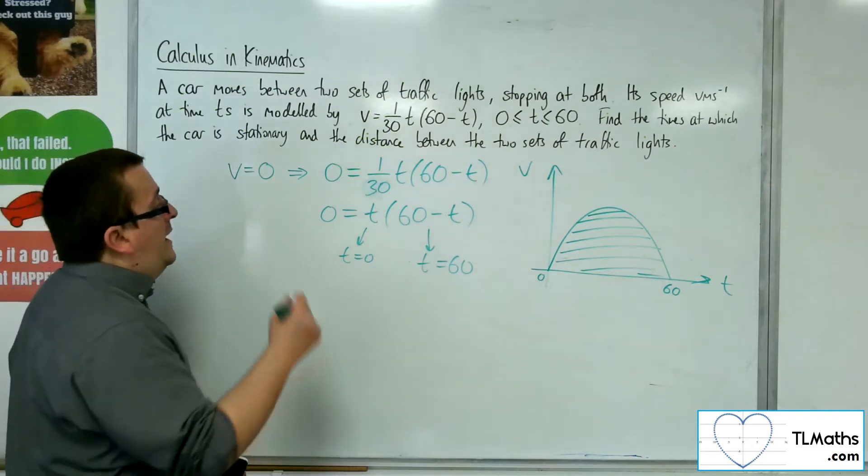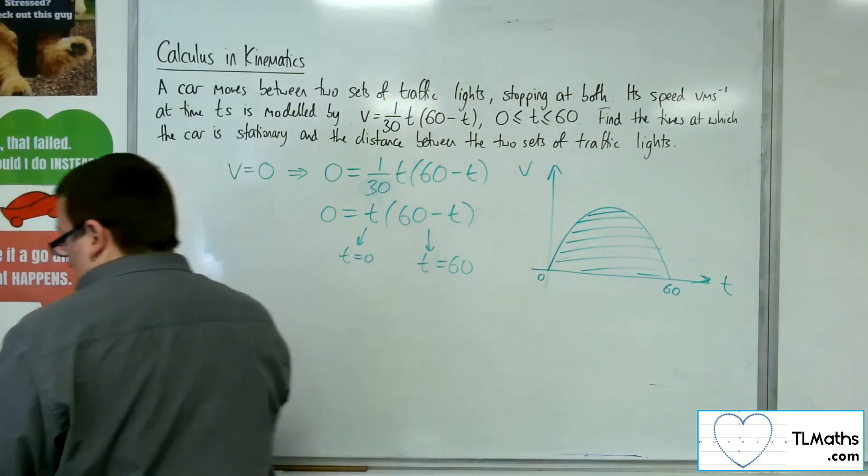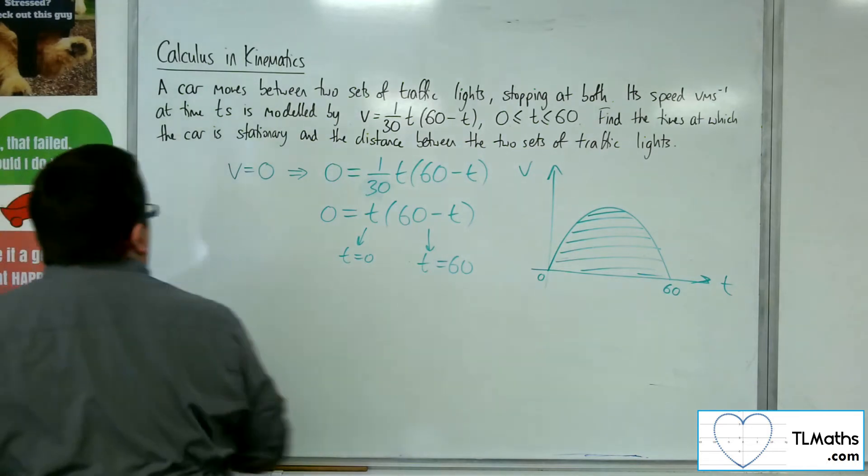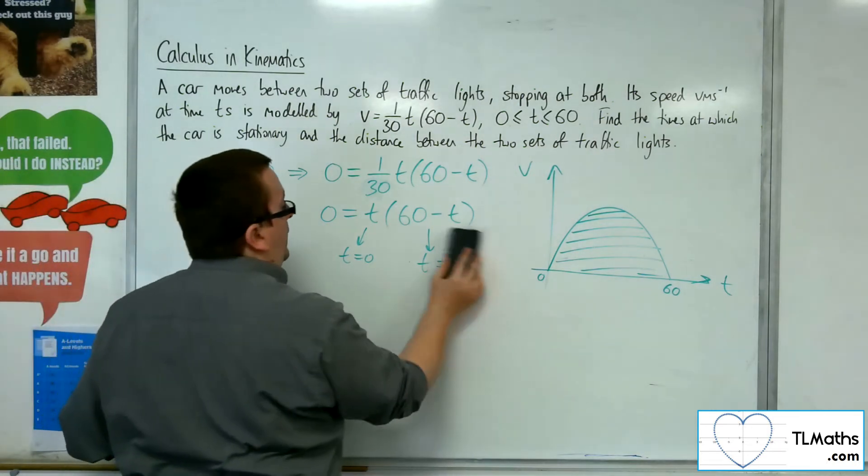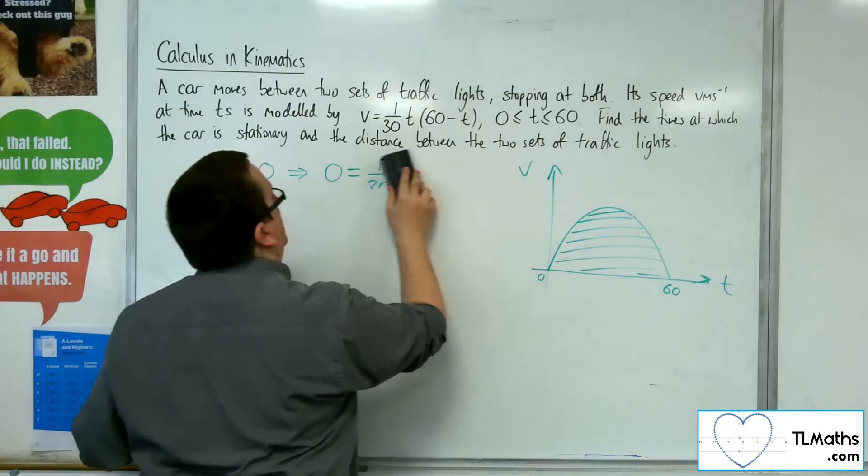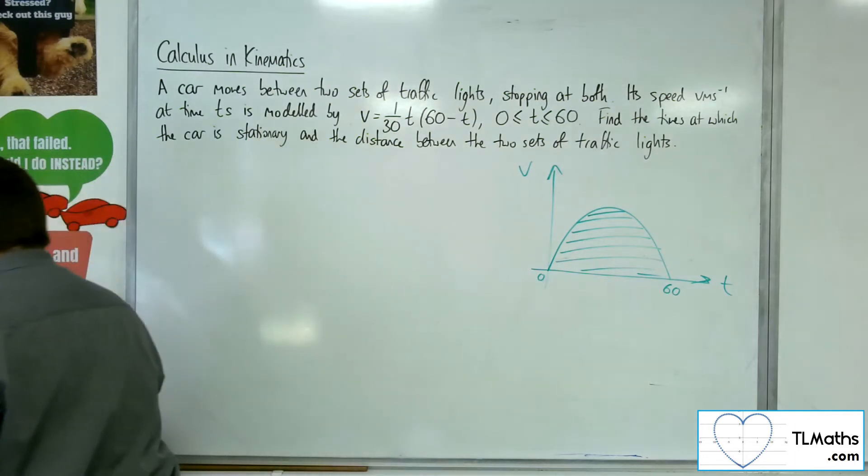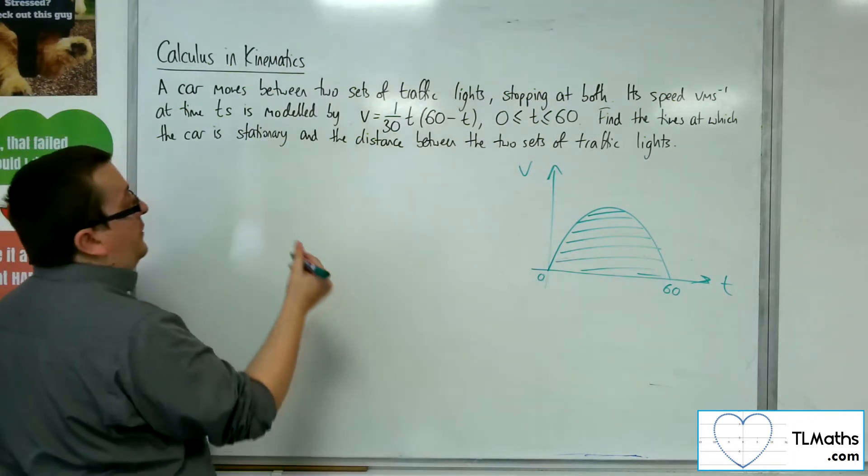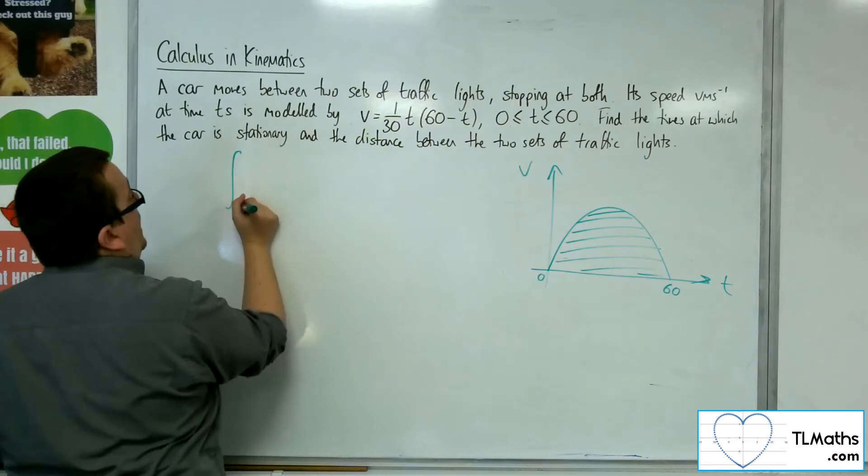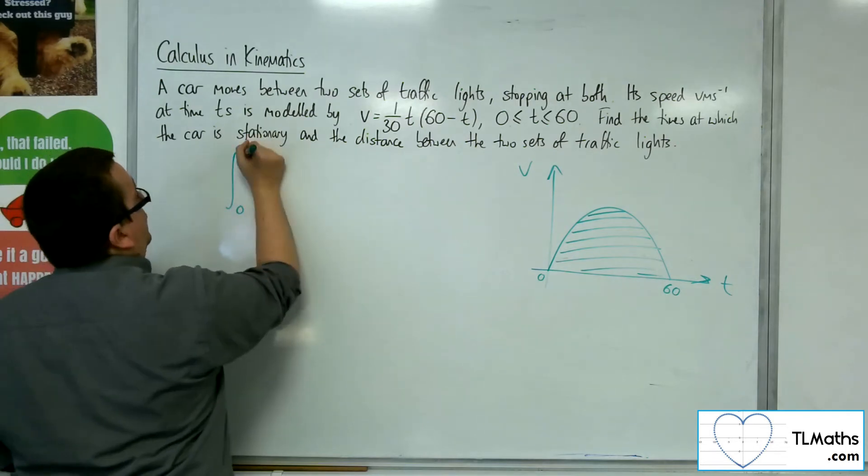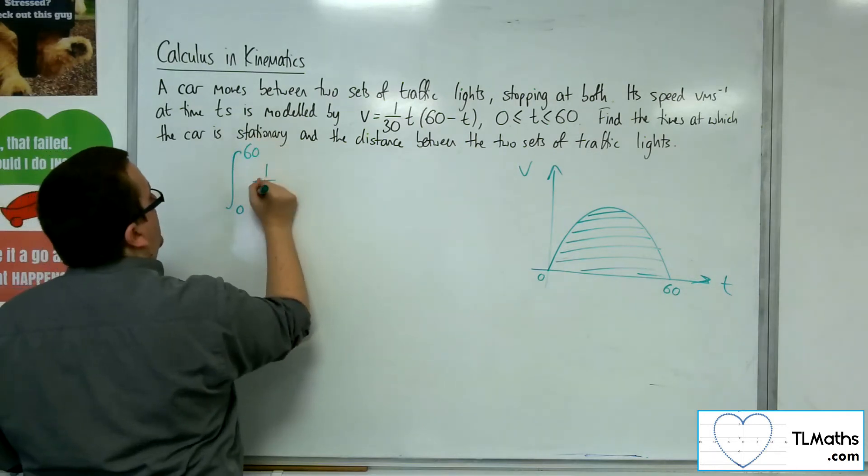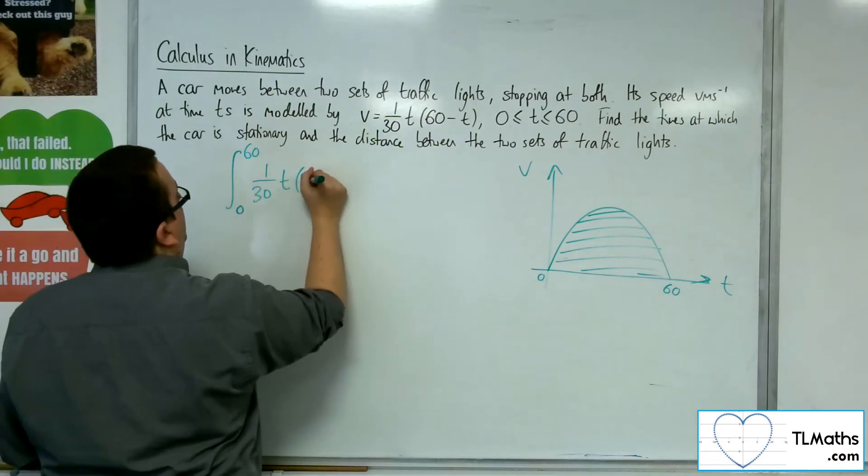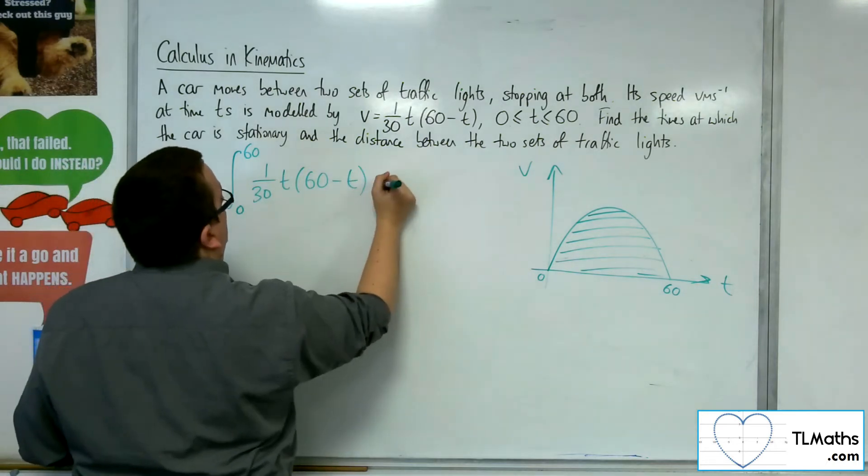So we can integrate the velocity between the 0 and 60, and evaluate that integral, and that will give us the distance. So we want to evaluate between 0 and 60, the integral of 1 thirtieth t, 60 minus t dt.